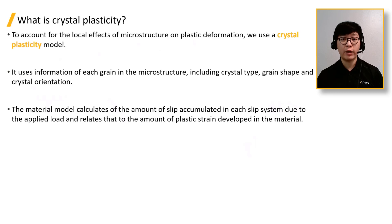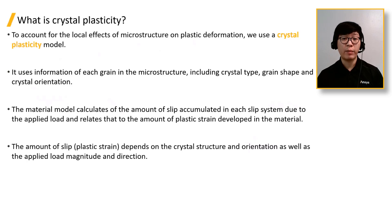The material model calculates the amount of slip accumulated in each slip system, due to the applied load, and relates that to the amount of plastic strain developed in the material. The amount of slip or plastic strain depends on the crystal structure and orientation, as well as the applied load, magnitude, and direction.